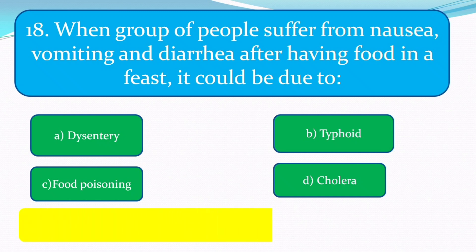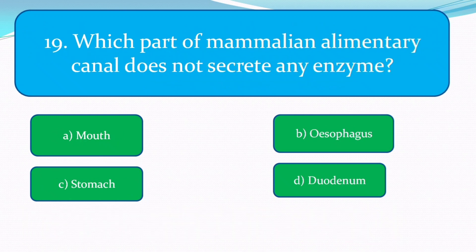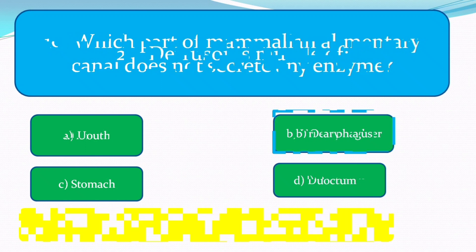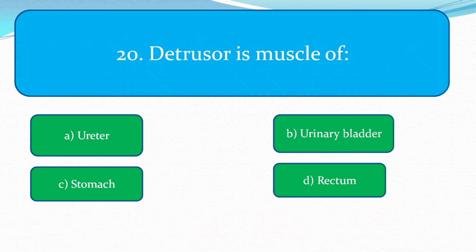Which part of the mammalian alimentary canal does not secrete any enzyme? The correct answer is the esophagus. The detrusor is the muscle of the urinary bladder.